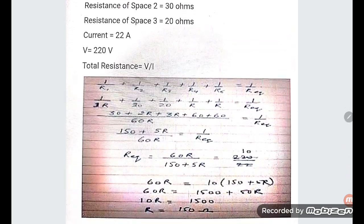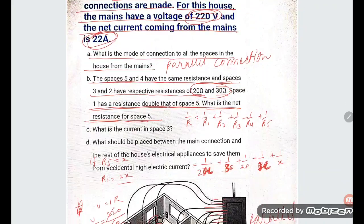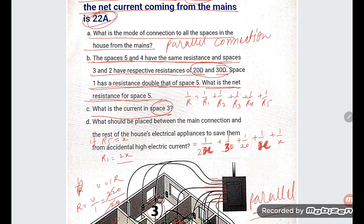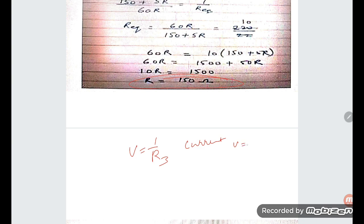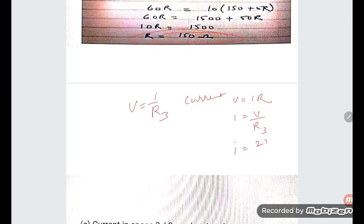So the answer is x = 150 ohms for space 5. Now, what is the current in space 3? Space 3 has a resistance R3 = 20 ohms. Using V = IR, the current I = V/R3 = 220/20, which gives I = 11 amperes.